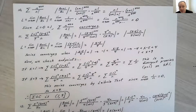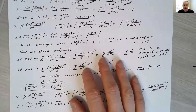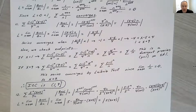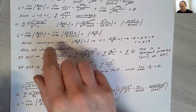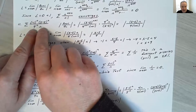The next two problems involve power series, which also use the ratio test as the first step. In a power series, you have the variable X in the series and need to find the values of X that cause the series to converge.